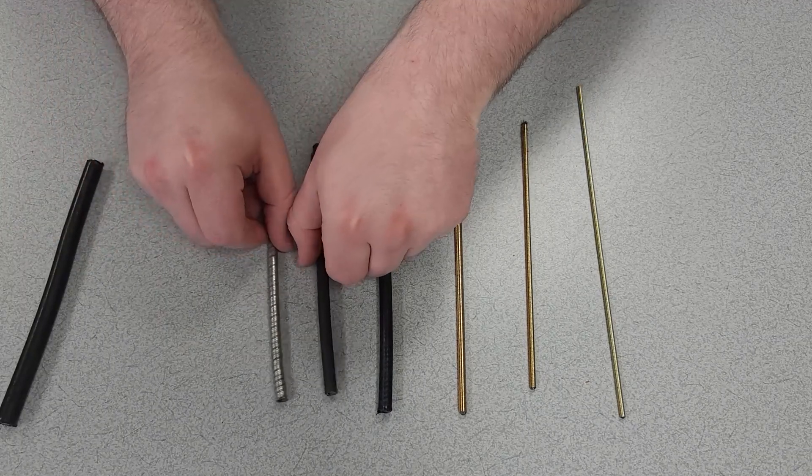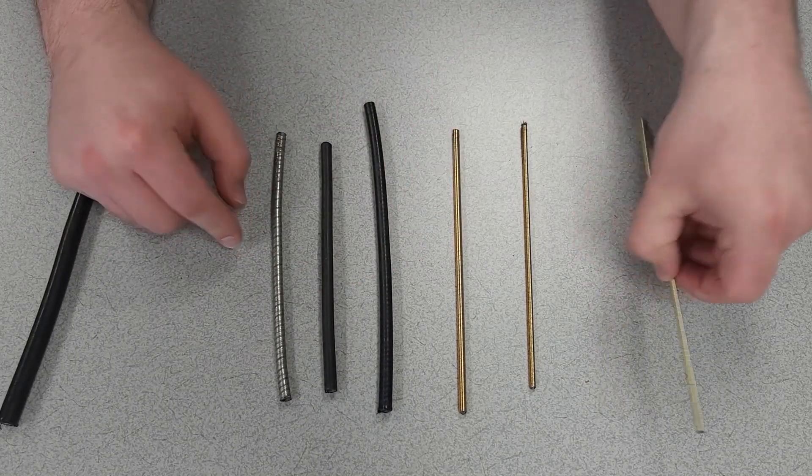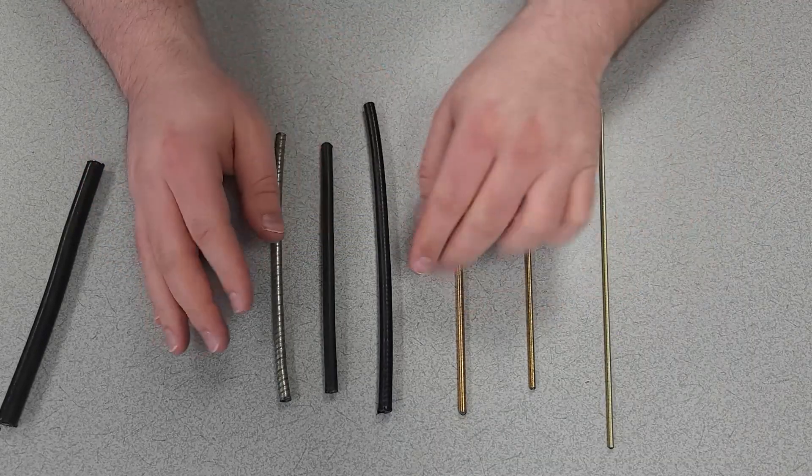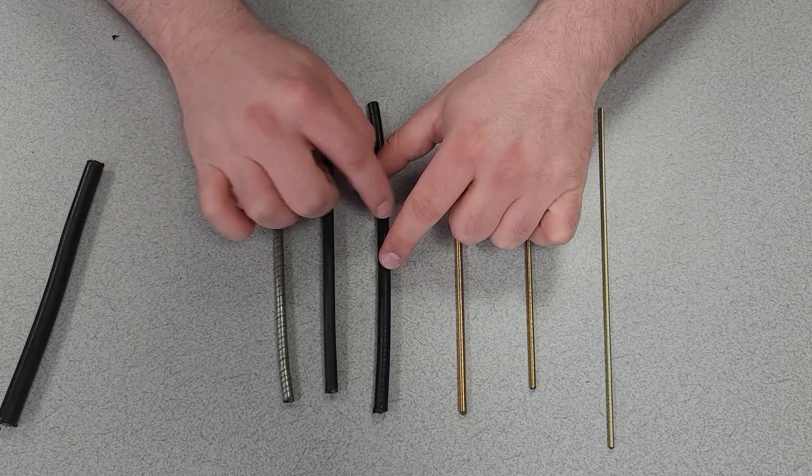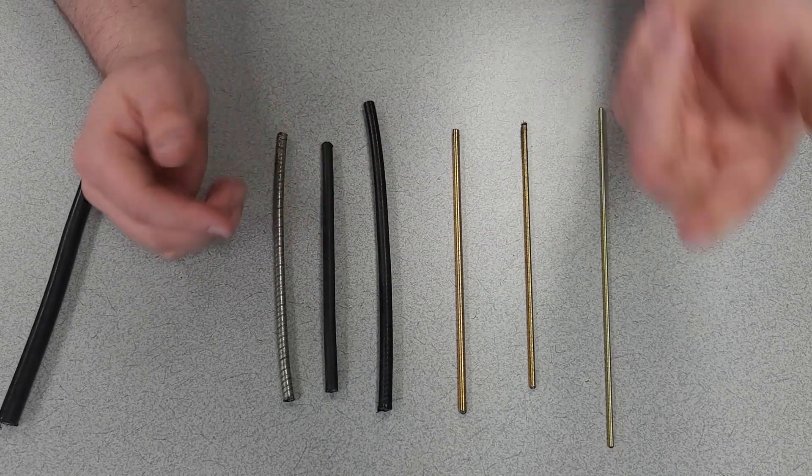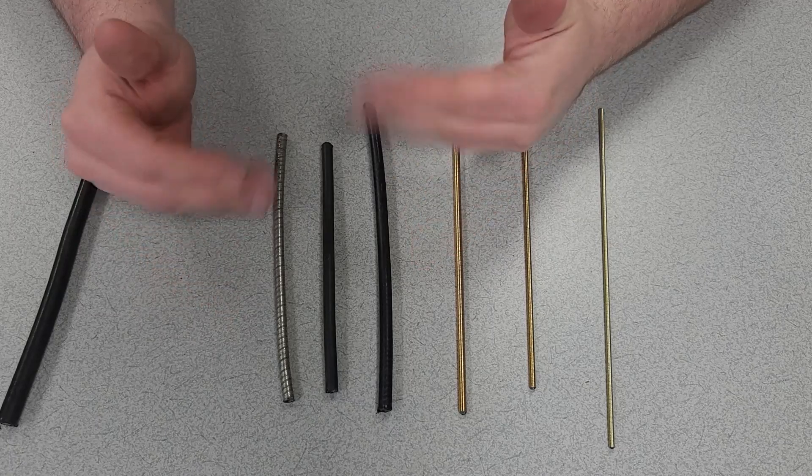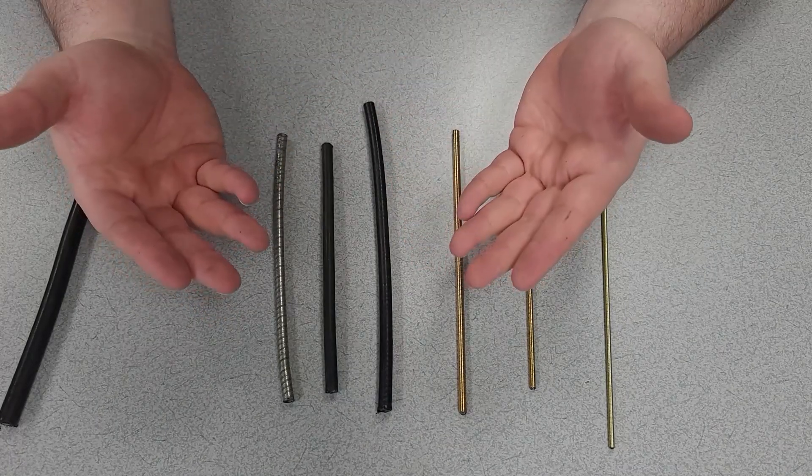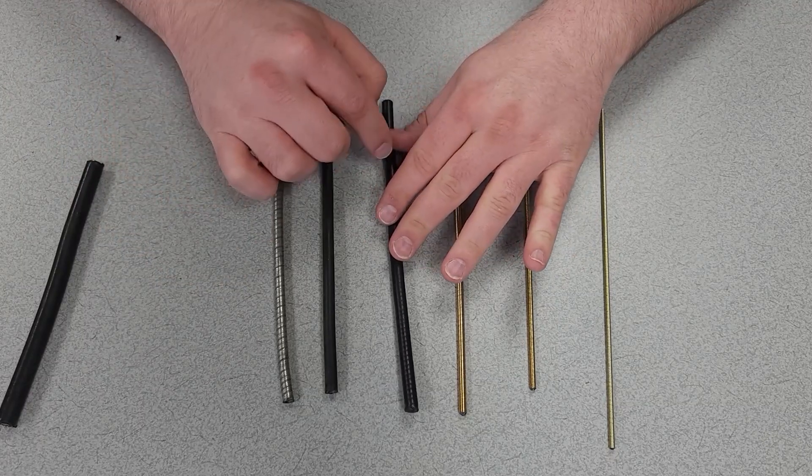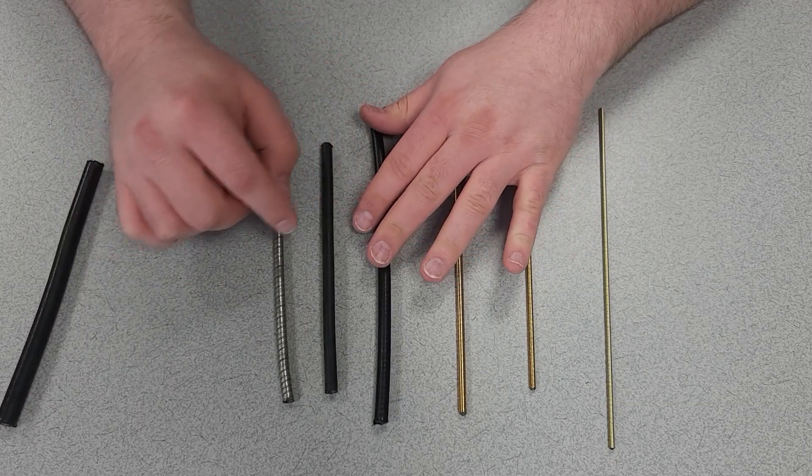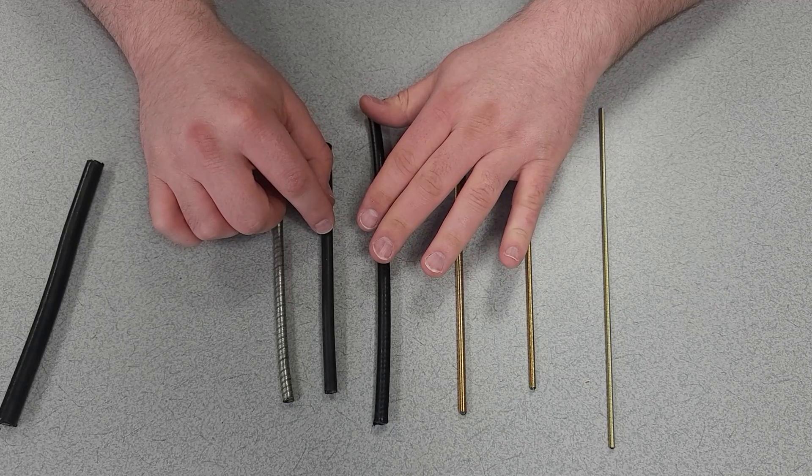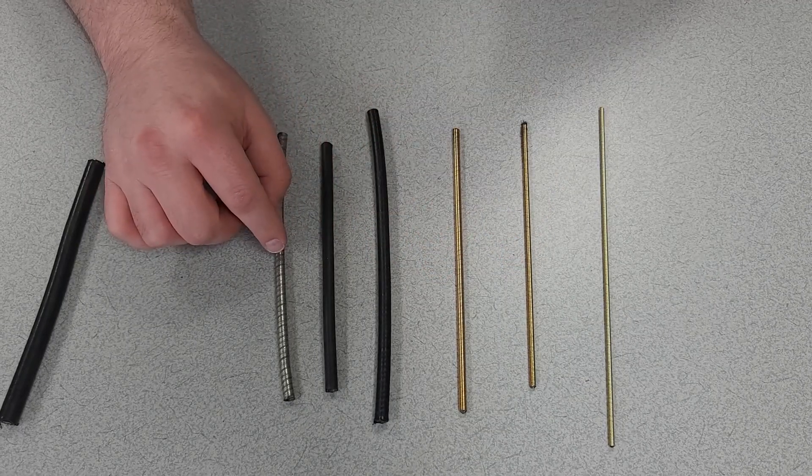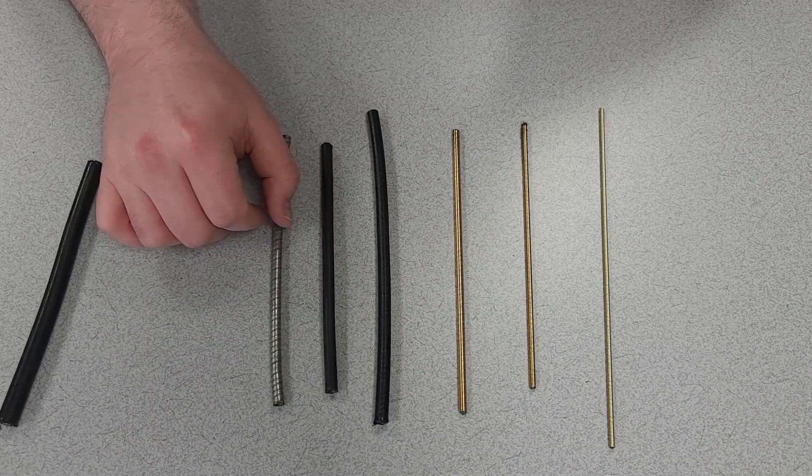So all three of these will still take the 0.130 core. The only difference is the outer diameter, and that will change the availability of the kind of ferrules you're able to pair up with it. For that very reason, almost exclusively, we'll use the 0.330. This is 0.295, and I believe this is 0.296.